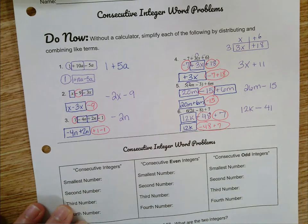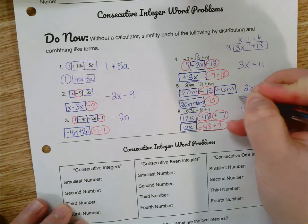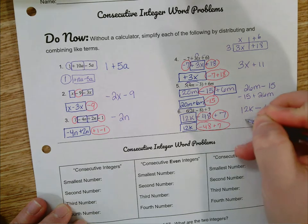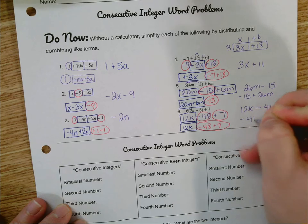Please note, for number 5 and 6, you could have also written negative 15 plus 26m. And for number 6, negative 41 plus 12k.